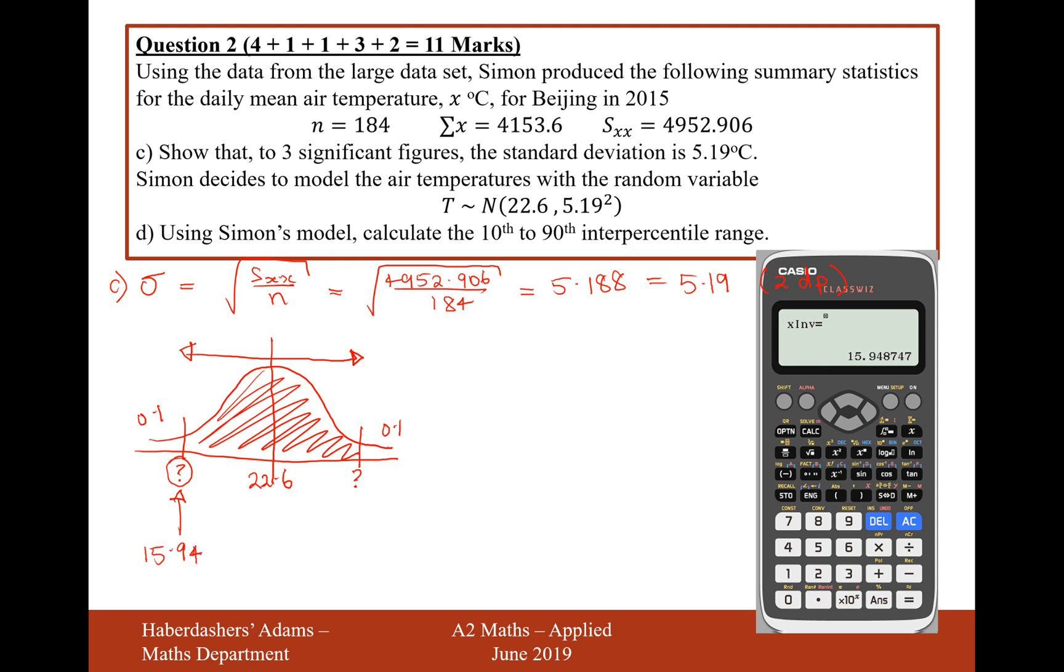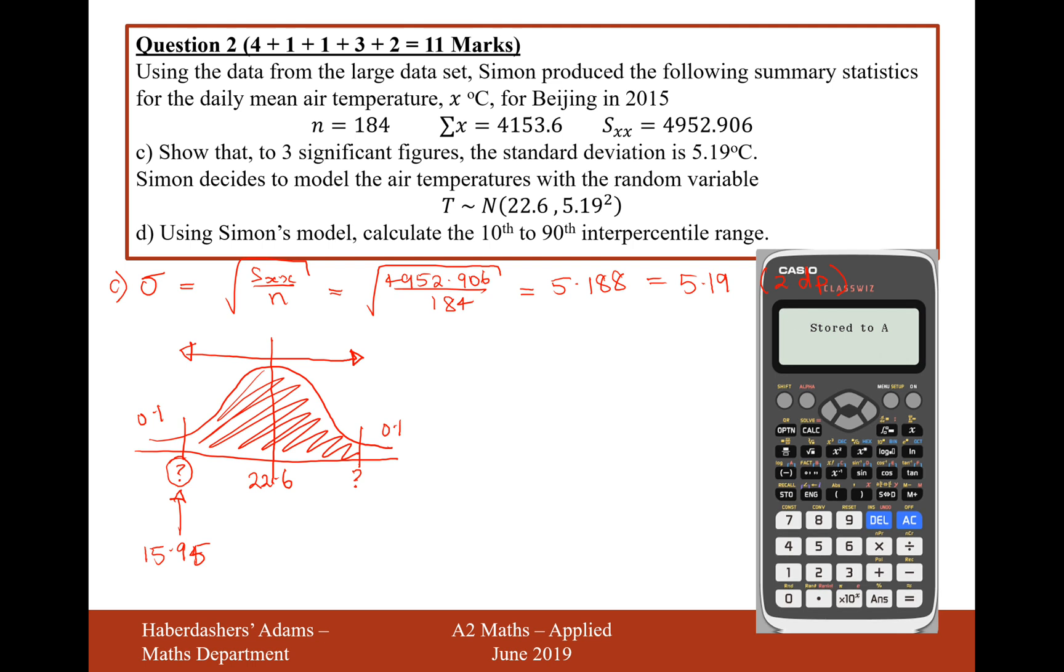Okay, now what would be helpful is if we stored this in our calculator as the value A, so hit the STO button and then the red A above it, you don't need to press alpha for that, just STO and then the red A.